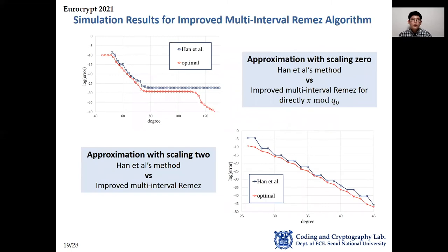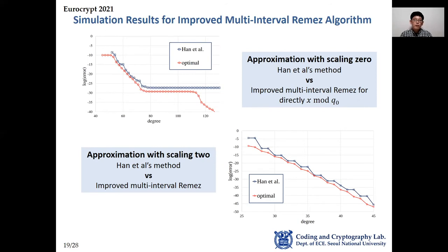These graphs show simulation results comparing the previous method and the Improved Multi-Interval Remez Algorithm. The red graph represents not only our result but also the theoretical bound for the approximation. The previous approximation method results are close to the bound, but there is still a 2 to 5-bit precision gap. The Improved Multi-Interval Remez Algorithm takes less than 10 seconds, making it more desirable to use the optimal minimax approximate polynomial.